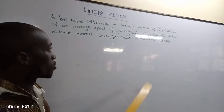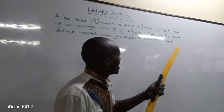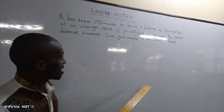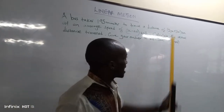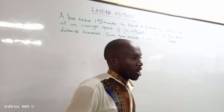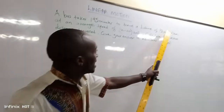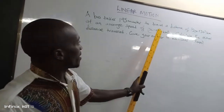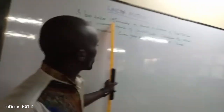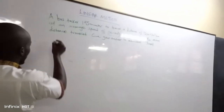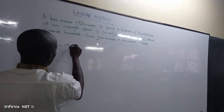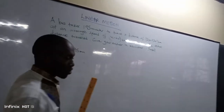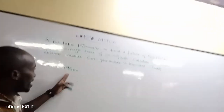The reason you are asked for the actual distance is because the distance is expressed as x plus 30 km, which is not the actual value. So we have the distance, the speed, and the time. Time is equal to 195 minutes, so we need to convert it to hours.